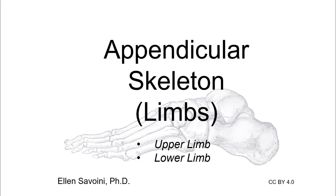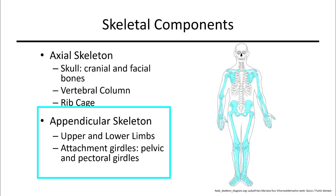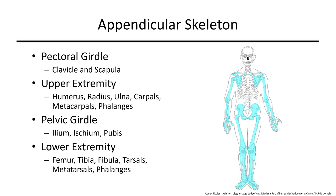Now we'll discuss the appendicular skeleton. There are four parts: how the upper limb attaches to the axial skeleton via the pectoral girdle, details about the upper limb, then the lower limb's attachment via the pelvic girdle, and then the lower limb. The appendicular skeleton includes our limbs and their attachment points, including the pectoral girdle.